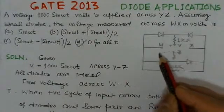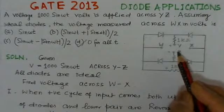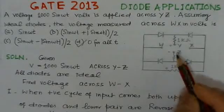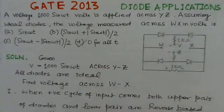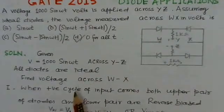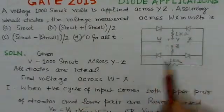That means for the positive cycle as well as for the negative cycle, how the corresponding input appears at the output. So, we will see here. We have to find the voltage WX.